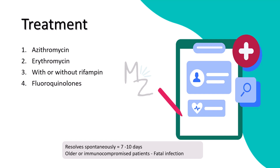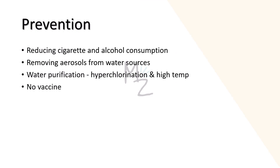Treatment: Azithromycin or erythromycin, with or without rifampin, is the treatment of choice. Certain fluoroquinolones such as levofloxacin or trovafloxacin are also drugs of choice. Legionella pneumophila frequently produces beta-lactamases, so penicillin and cephalosporins are less effective. Diseases caused by Legionella resolve spontaneously in 7–10 days, but older or immunocompromised patients may have a fatal infection. Prevention involves reducing smoking and alcohol consumption, removing aerosols from water sources, and reducing Legionella in hospital water supplies via high-temperature treatment or hyperchlorination. There is no vaccine against Legionella pneumophila.